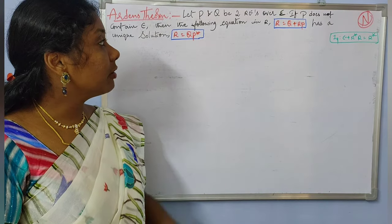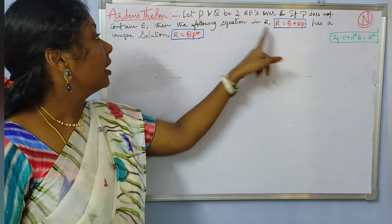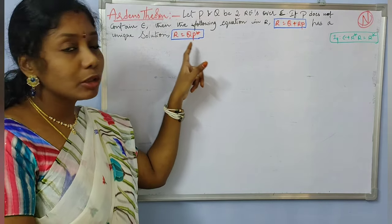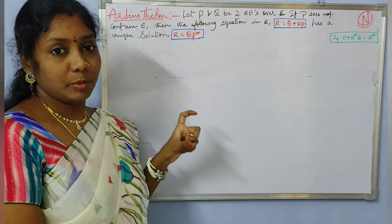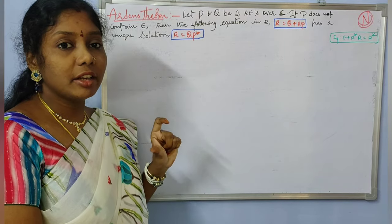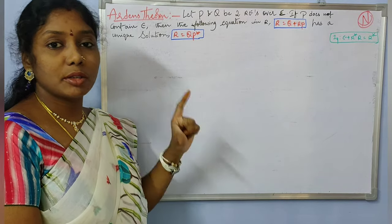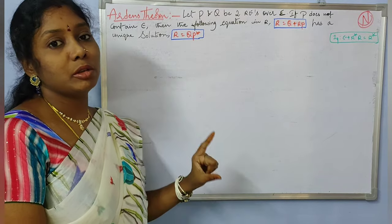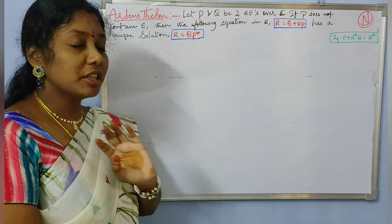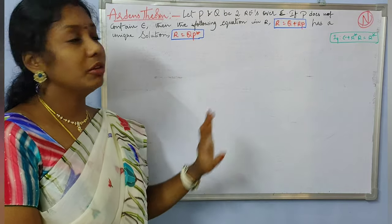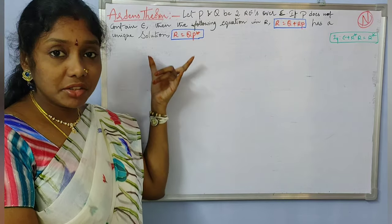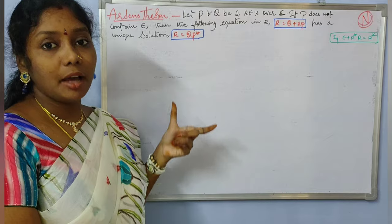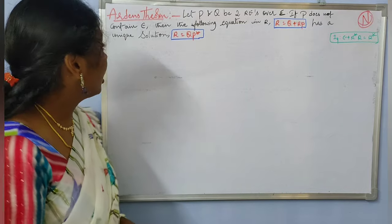This particular equation has R equal to QP star as the unique solution. There is no other solution for this equation. That is the statement of Arden's theorem.